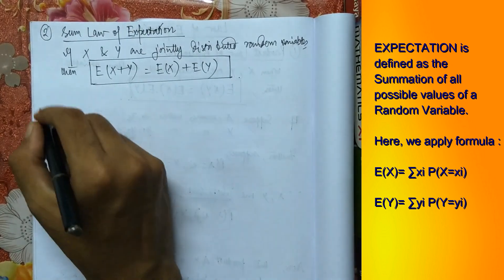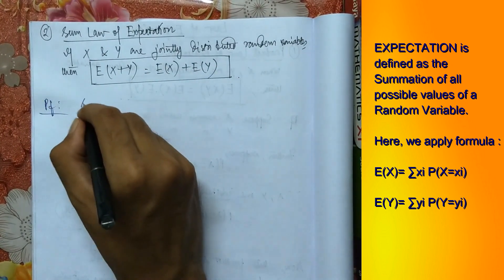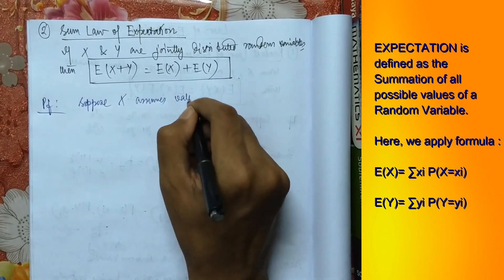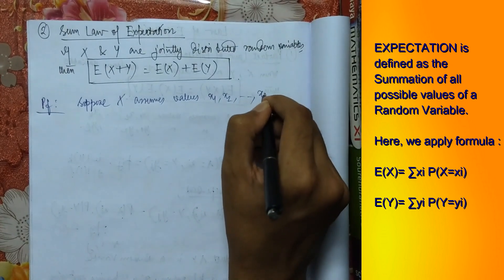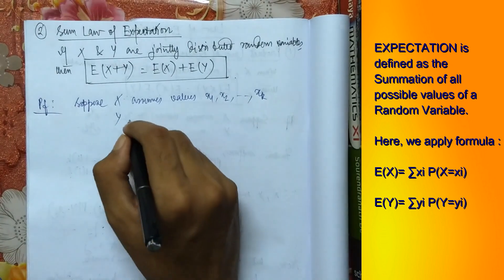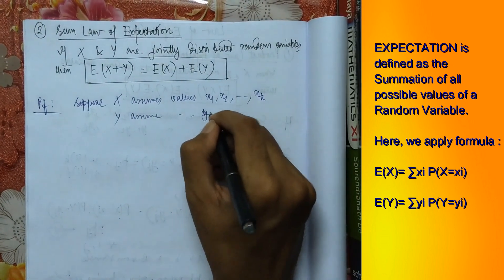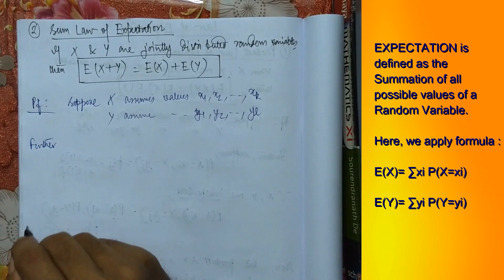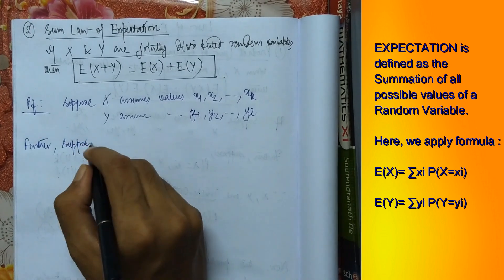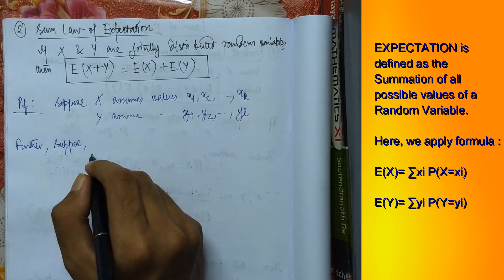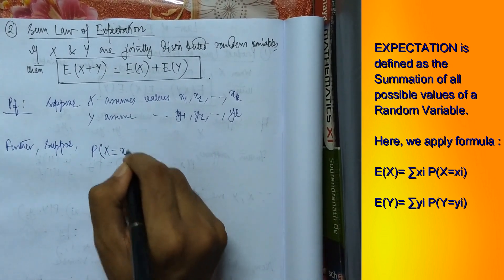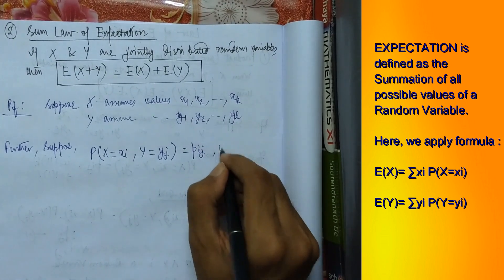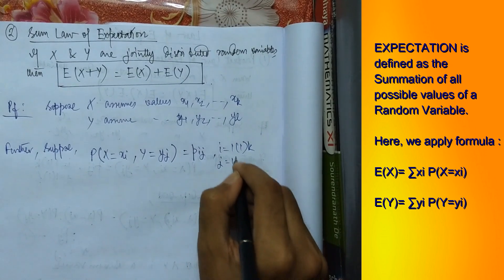The setup is the same as in the Product Law. Suppose X assumes values x1, x2, up to xk, and Y assumes values y1, y2, up to yl. Further suppose P(X = xi, Y = yj) = p_ij, where i runs from 1 to k and j runs from 1 to l.